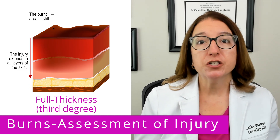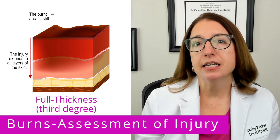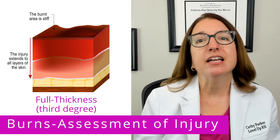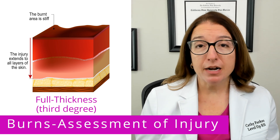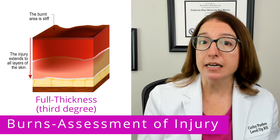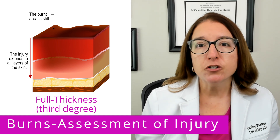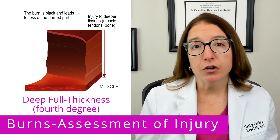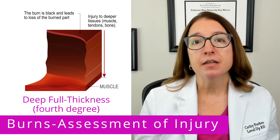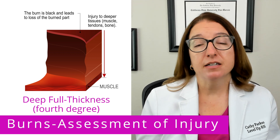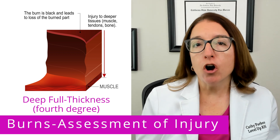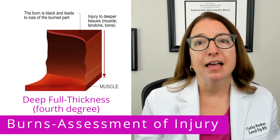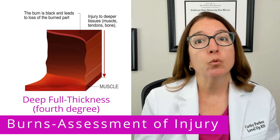With a full thickness burn, which is a third-degree burn, damage extends into the subcutaneous tissue. The affected area may be white, brown, or black in color, and it will have a dry, leathery appearance. Pain may not be present because the nerve endings, which are located in the dermis, have been destroyed. This level of burn injury requires skin grafting. With a deep full thickness or fourth-degree burn, damage extends beyond the subcutaneous tissue into the muscle, tendon, or bone. The affected area will be black in color with hard inelastic eschar, and again, pain may not be present. Skin grafting will definitely be required.